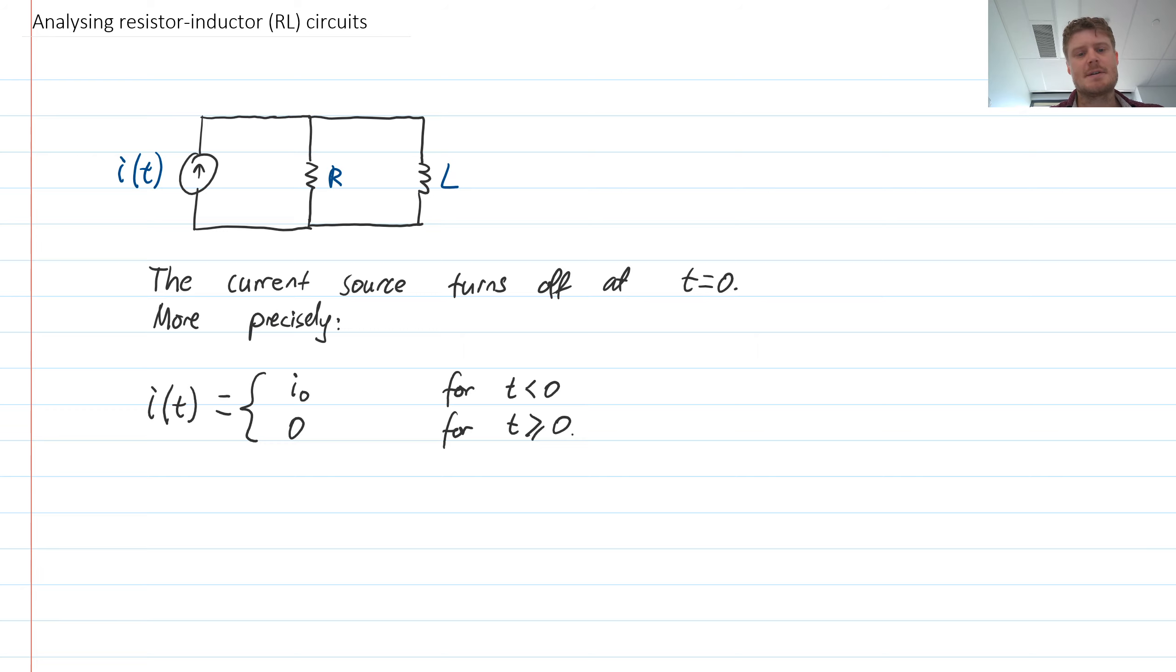Let's have a look at how to analyze circuits that contain resistors and inductors. So I have an example here where we have a current source and a resistor and an inductor, and the additional information that we have is that the current source turns off at a particular time at t equals 0.